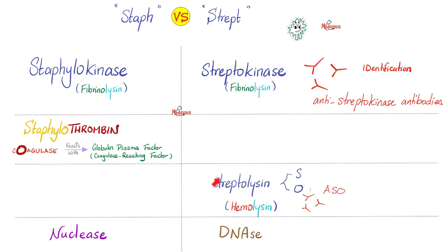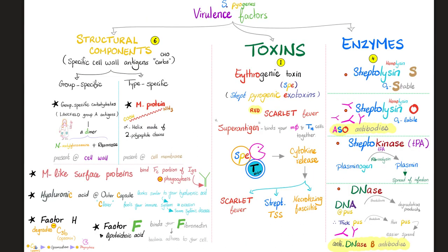The hemolysin of Streptococcus is also known as Streptolysin. We have Streptolysin S and Streptolysin O, and you will make antibodies against them. The antibodies against Streptolysin O are very important — we can measure these in your blood to establish whether or not you have a streptococcal infection. Streptococcus pyogenes makes four main enzymes: Streptolysin S, Streptolysin O, Streptokinase, and DNase. You can make antibodies against all of them, but the clinically relevant ones are antibodies against Streptolysin O (ASO) and the antibodies against DNase B — anti-DNase B antibodies.